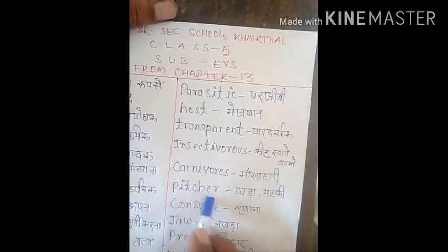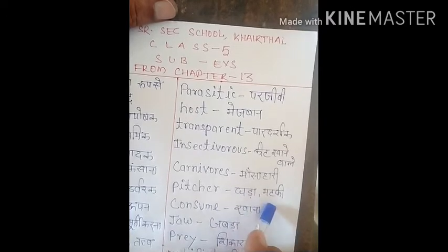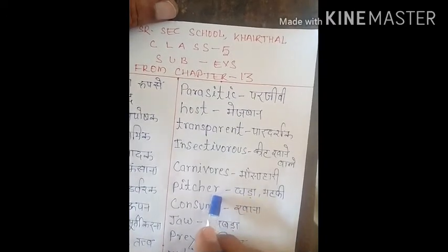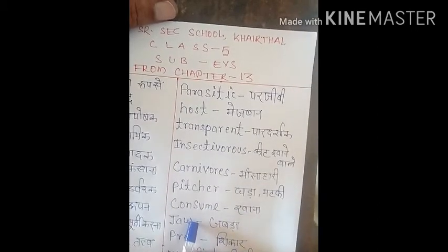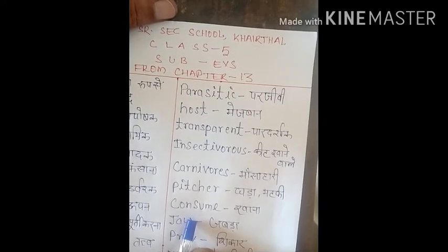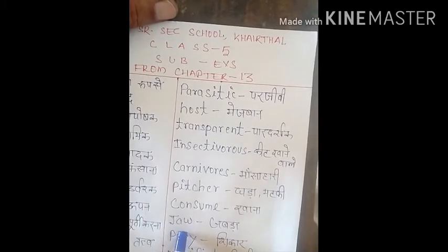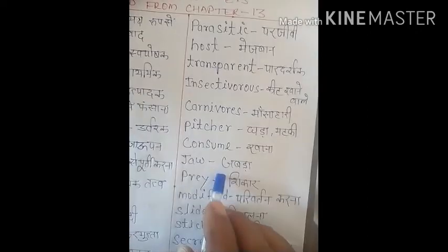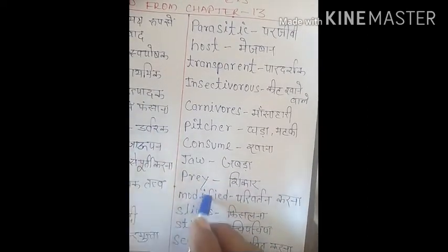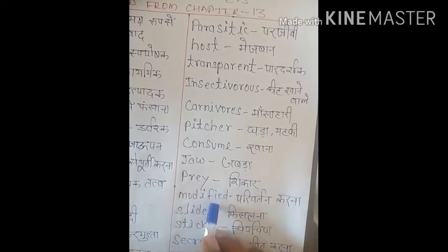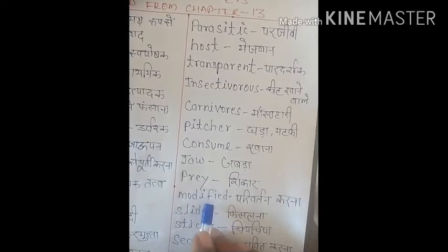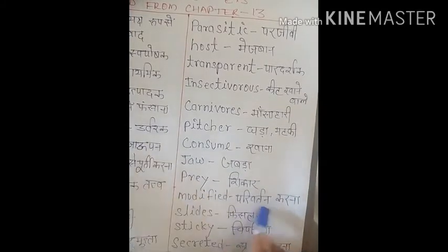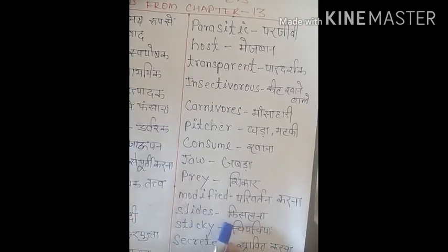Next word is 'pitcher', P-I-T-C-H-E-R. Pitcher means 'ghara', ya jis ki shape matki jaisi ho, us ko hum pitcher keh sakte hain. Next is 'consume', meaning 'khana'. Plants like sundew plants consume insects for their survival — apne jeene ke liye woh insects khaate hain. Next word is 'jaw', J-A-W. Jaw means 'jabda'. Next is 'prey', P-R-E-Y. Prey means 'shikar'. Next is 'modified', M-O-D-I-F-I-E-D. Modified means 'parivartit karna'.